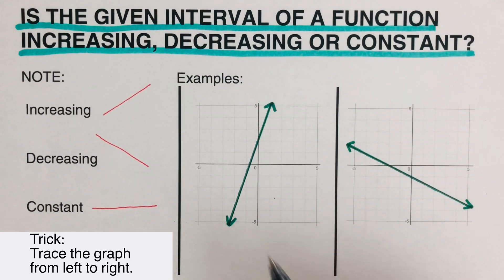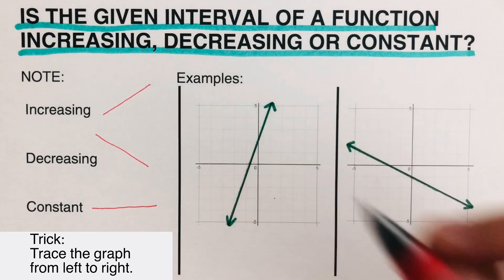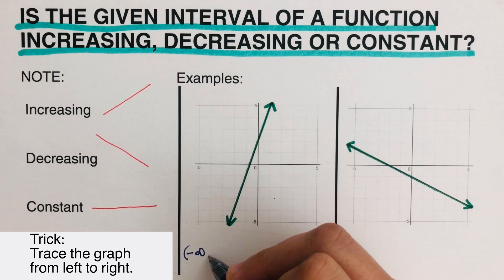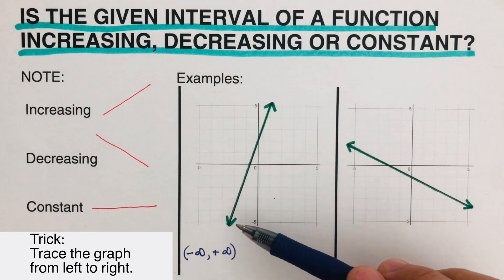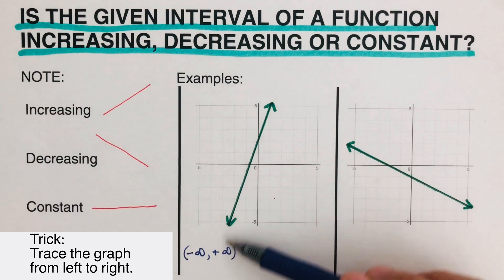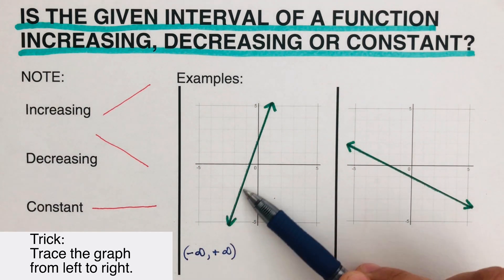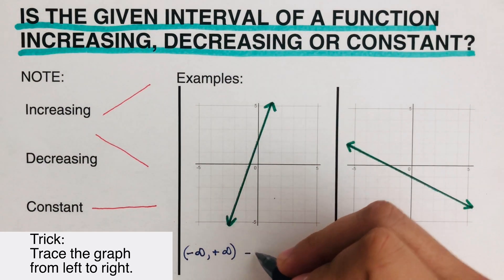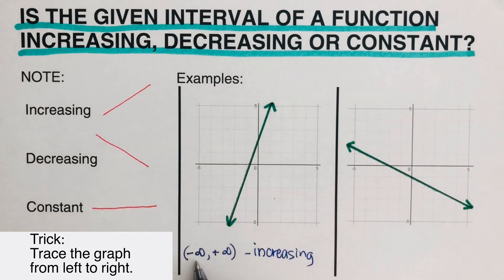Let's take this first example. For this function, the interval we can look at is from negative infinity all the way to positive infinity. Tracing the graph from left to right, it's going uphill, so this function is increasing from negative infinity to positive infinity.